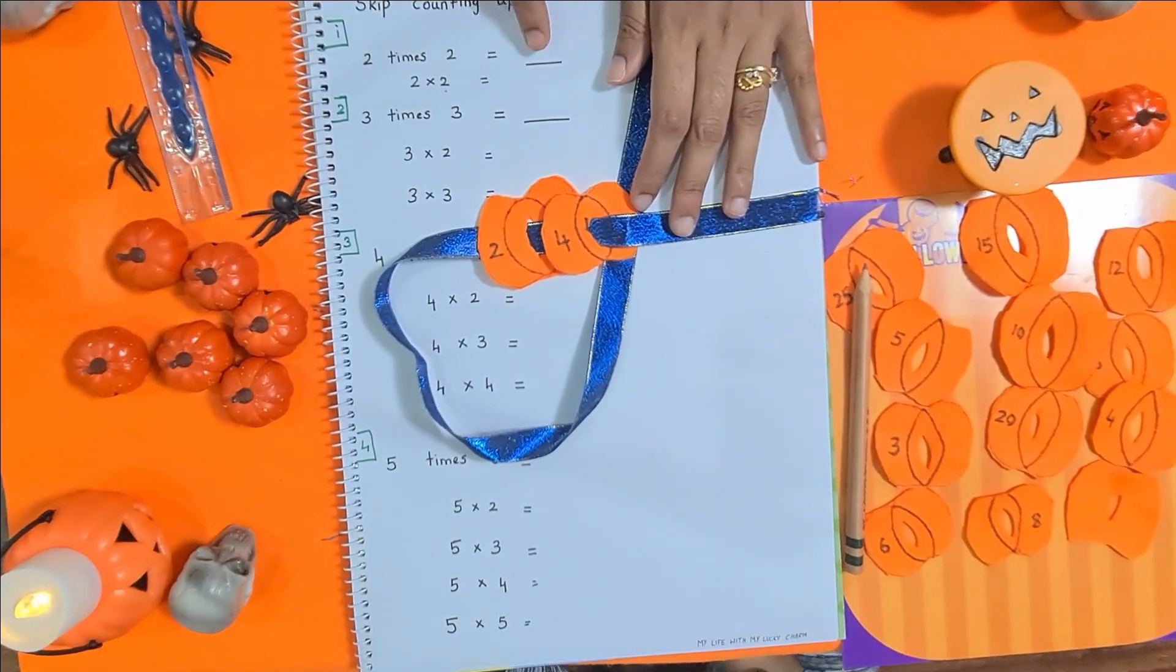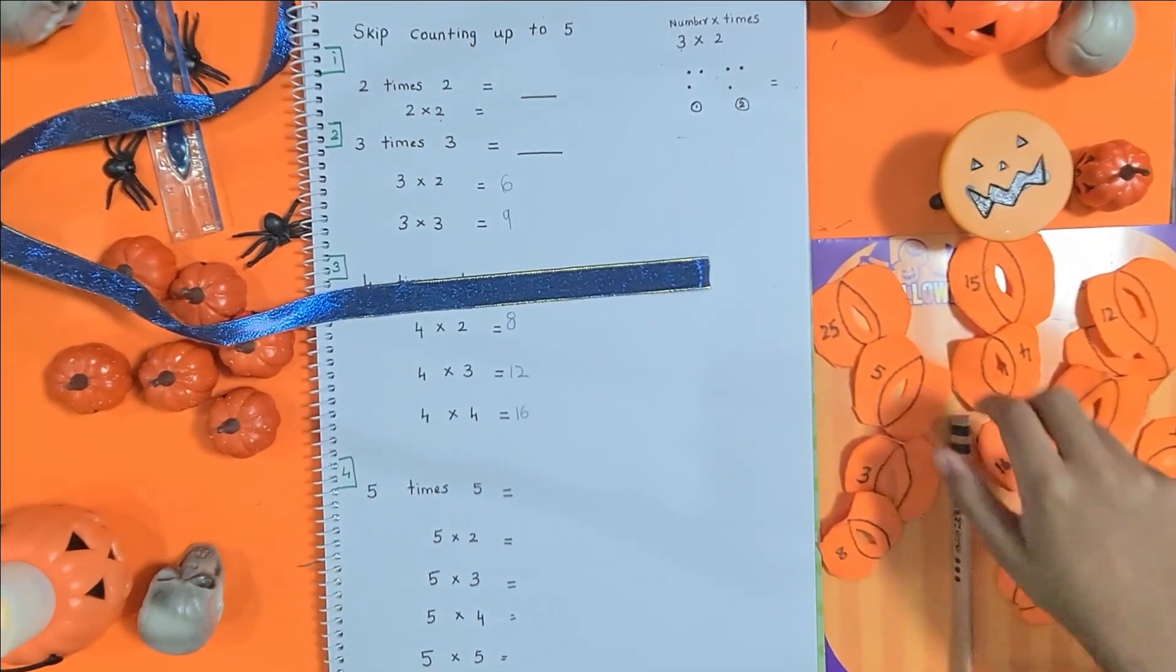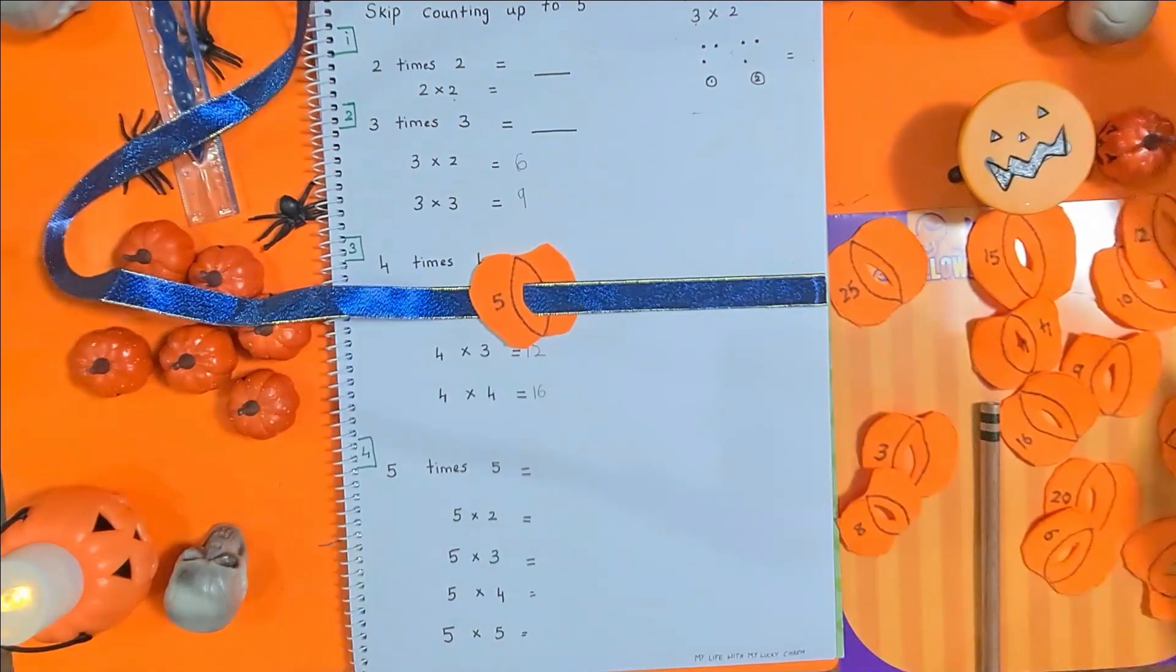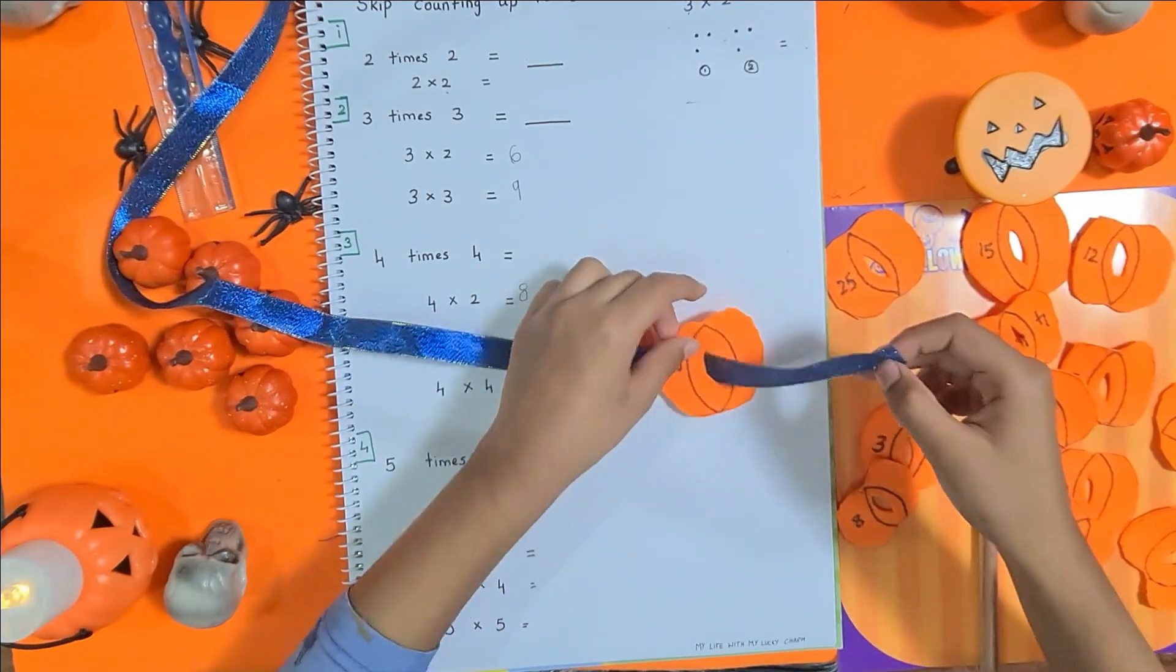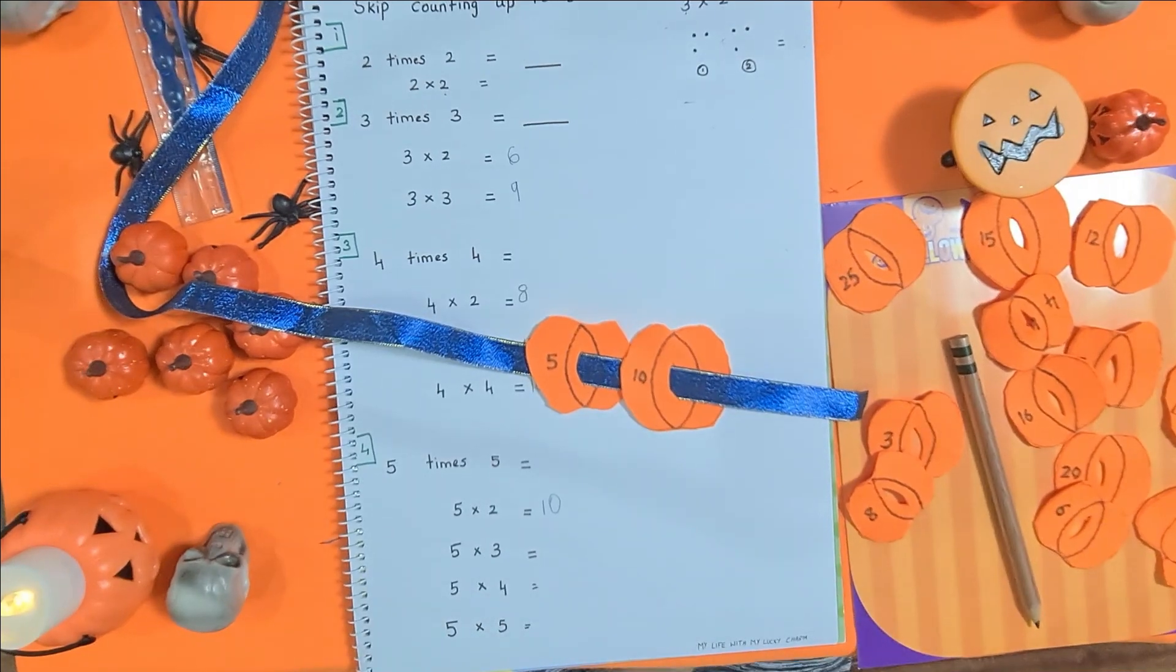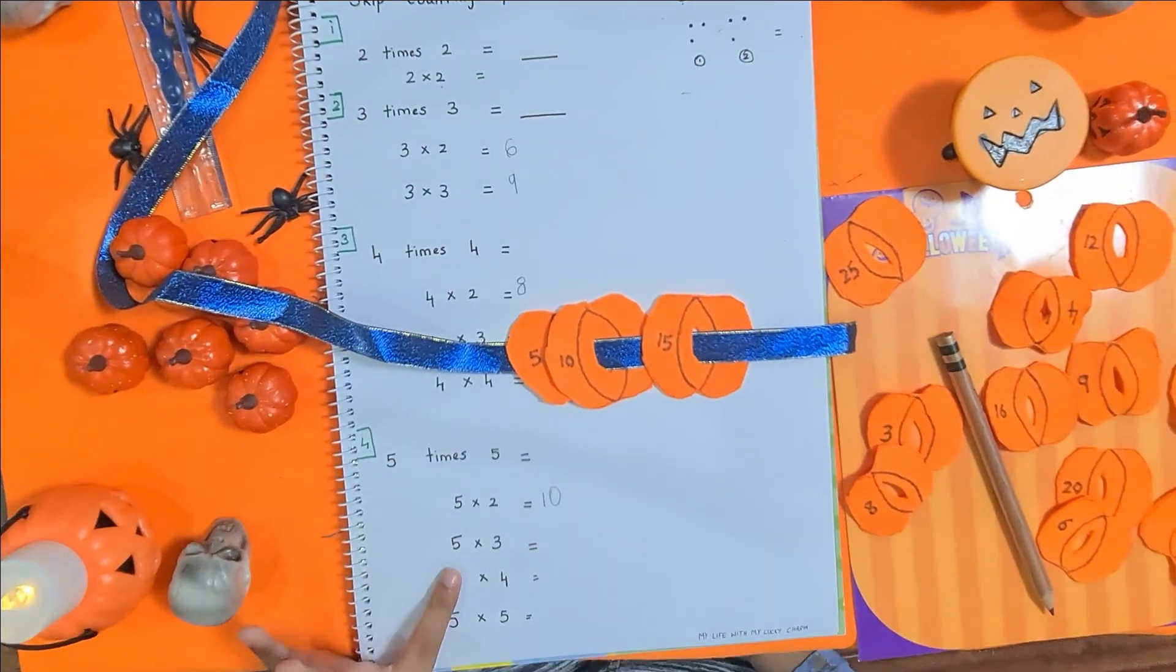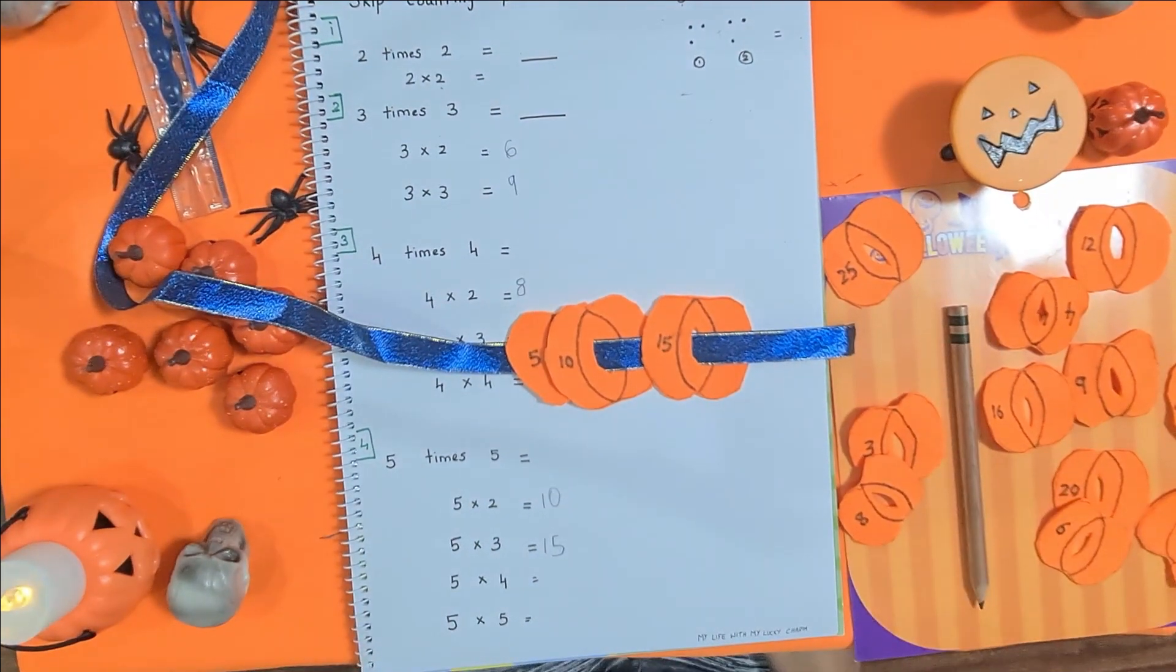Now it's counting by five. I'm going to start with five. Two times five is ten. Now four times five, twenty.